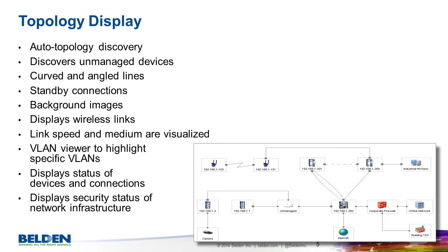Typical for an industrial application, there's even a color which indicates that a status is better but the status change has not yet been acknowledged. Industrial HiVision can even supervise the security status of devices and display a warning if the device is not configured securely. For example, the device is still using default passwords or has unsecure protocols like Telnet enabled.